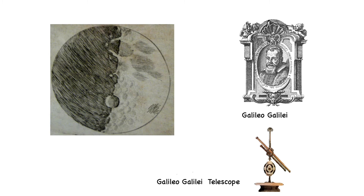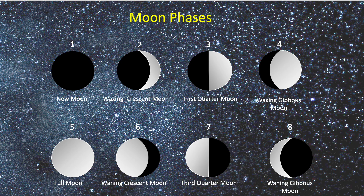In 1609, Galileo Galilei drew one of the first telescopic drawings of the moon and noted that it was not smooth but had mountains and craters. When you look up at the night sky, you might notice that the moon looks a little different each night — this is due to the moon's many phases.